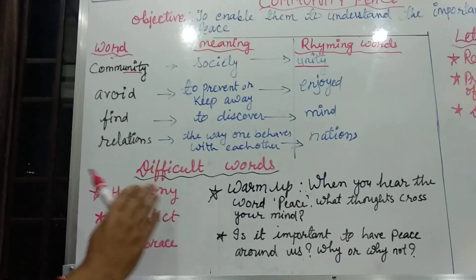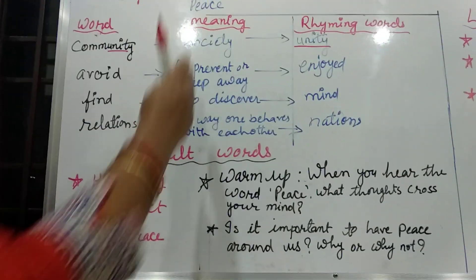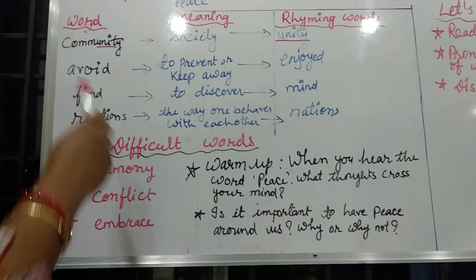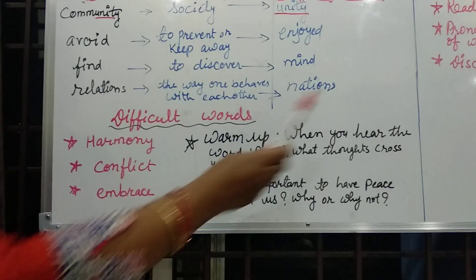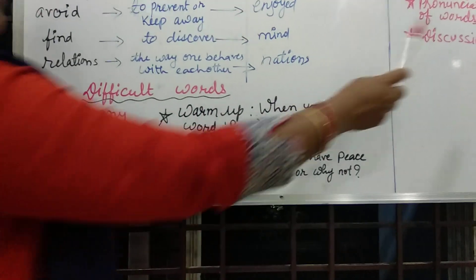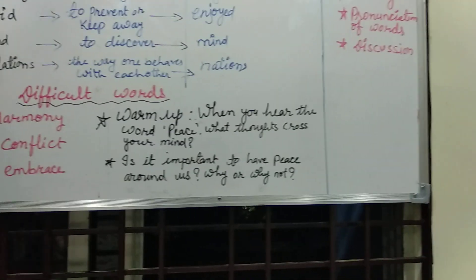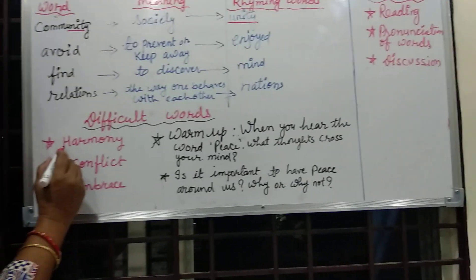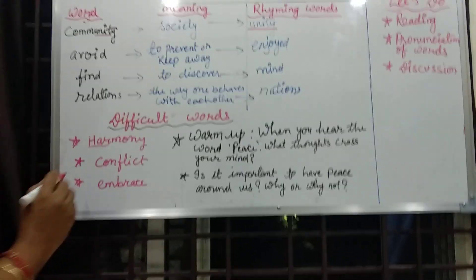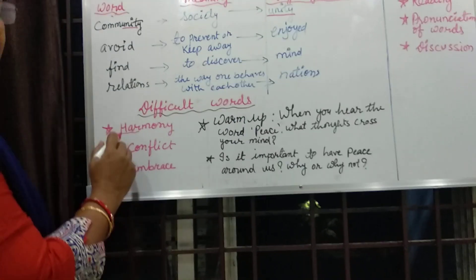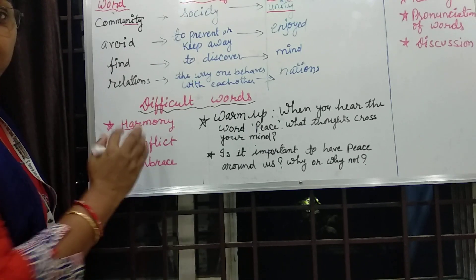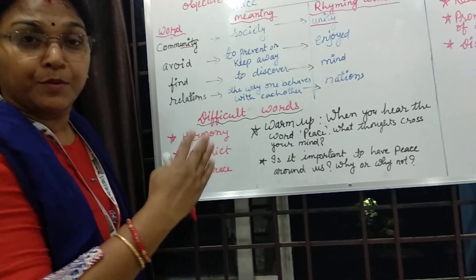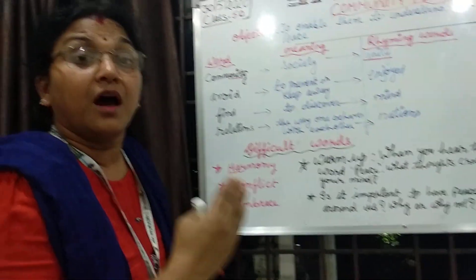Now these are some of the words which have their rhyming words and their individual meanings. After reading this, let us come to some of the difficult words and I will tell you how to do the pronunciation. The first word is harmony. You break the word into syllables — har-mo-ny. So we pronounce it as: harmony. This is how the syllable is divided: H-A-R for one syllable, and mony for the other syllable.